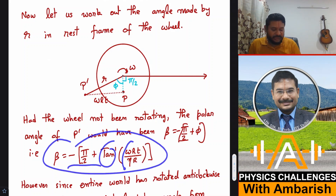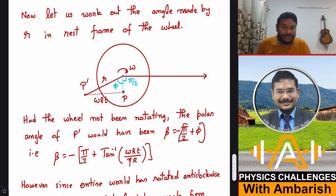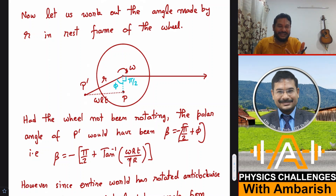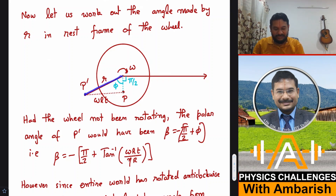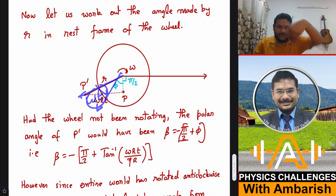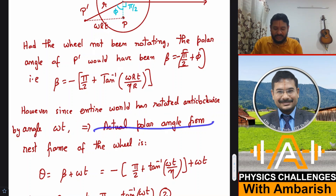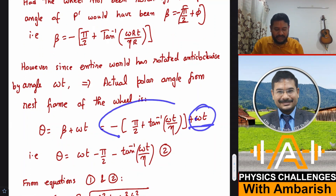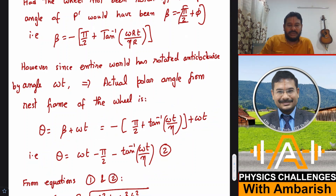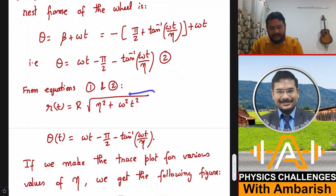But the wheel is rotating clockwise with ω, so the entire world appears to rotate anti-clockwise, meaning the line to the pencil appears to have shifted by ωt in the anti-clockwise direction. Since the entire world has rotated anti-clockwise by ωt, the actual polar angle from the rest frame of the wheel becomes θ(t) = β + ωt = ωt − π/2 + arctan(ωt/η). So we now have both r(t) and θ(t) — the polar parametric equations for the pencil's trace in the wheel's rest frame.